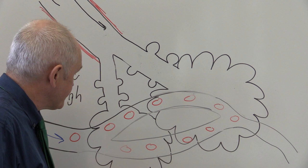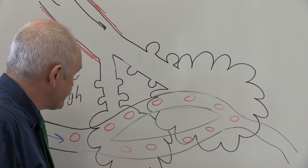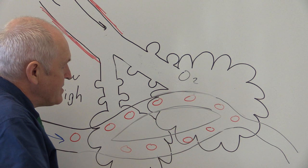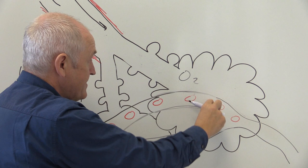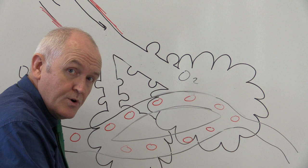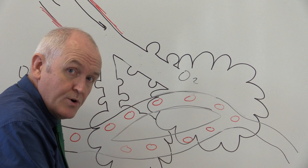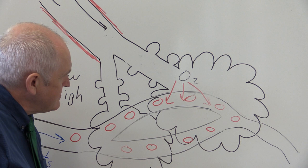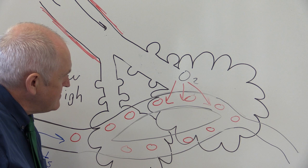Considering the oxygen: the oxygen in the alveoli is relatively high, but the oxygen in the blood is relatively low. This means there's a higher concentration of oxygen in the alveolar air than in the blood. As a result, oxygen will move down its diffusion gradient into the blood, where it will mostly become associated with the hemoglobin molecules in the red cells.